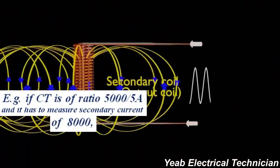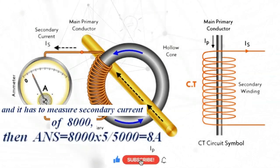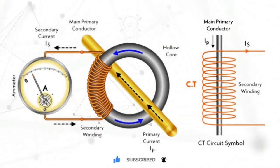The answer or output will be 8000 multiplied by 5 divided by 5000, which gives 8 ampere. This result will be given to the ammeter. After measuring 8 ampere, we can calculate the primary current. Same operation applies to PT, but measuring voltage.